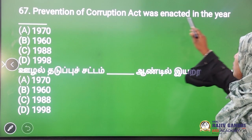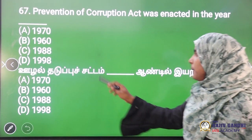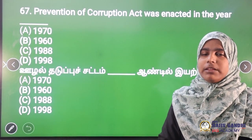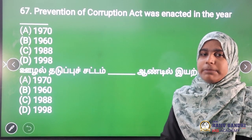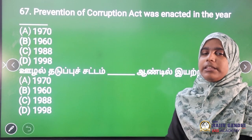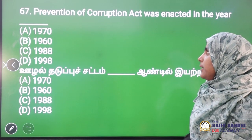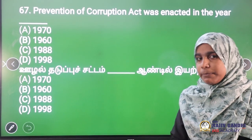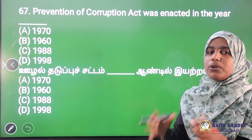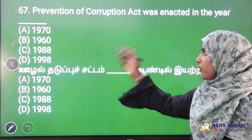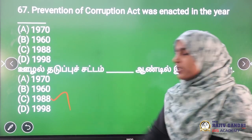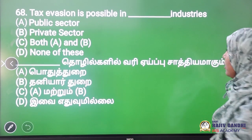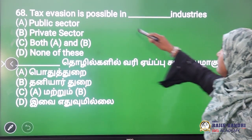The Prevention of Corruption Act was enacted in which year? Corruption is mainly money-related, and it is linked to demonetization concepts. This is a very direct and important question. The answer is 1988. Next question.